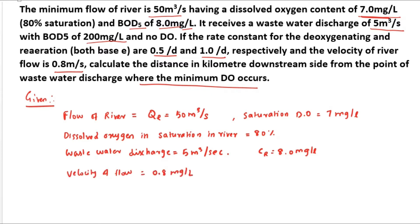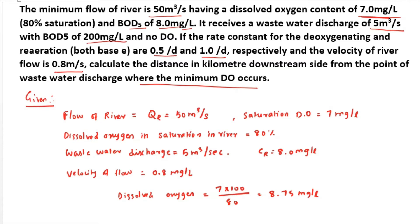The saturation DO will be 7 × 100 ÷ 80 = 8.75 mg/L. So the initial DO deficit D₀ = 8.75 minus 7.0 = 1.75 mg/L.